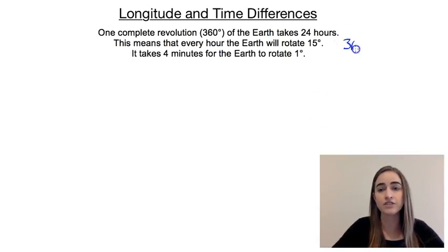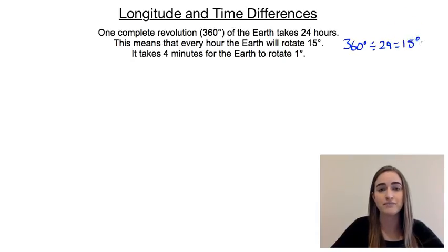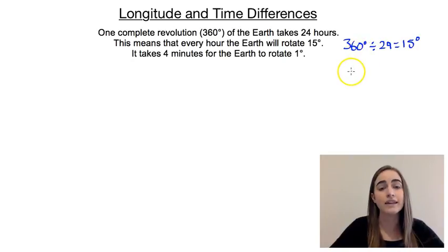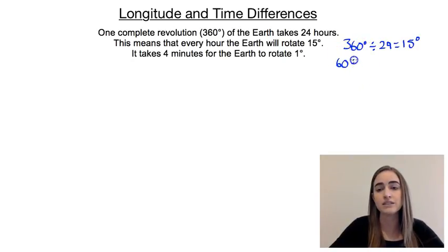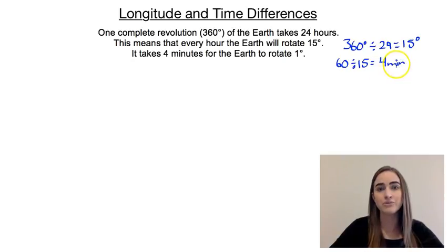We know it takes 360 degrees and 24 hours to complete that turn, so that means in one hour it will turn 15 degrees. We can also figure out how long it will take to turn one degree: 60 minutes divided by 15 degrees gives us four minutes. So every four minutes, the earth will rotate one degree.